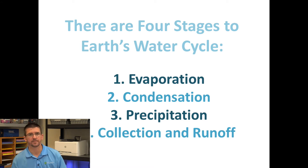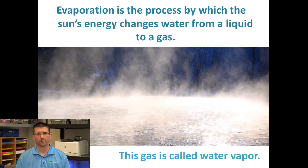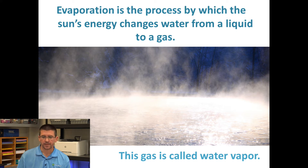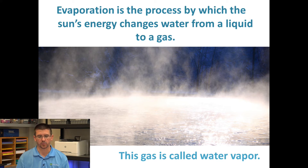Those four stages are evaporation, condensation, precipitation, and collection and runoff. When we talk about evaporation, everybody has probably seen a puddle on the ground and noticed that by later in the day the puddle is gone. That's the idea of evaporation — water in a liquid form on the ground, whether it be a puddle, lakes and rivers, or even the ocean, being warmed by the sun and changing to a gas that rises up into the atmosphere. We call this gas water vapor.